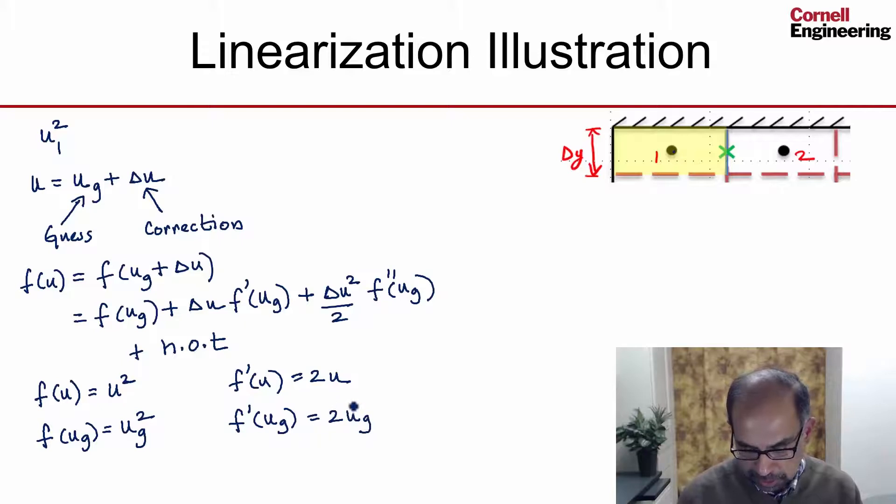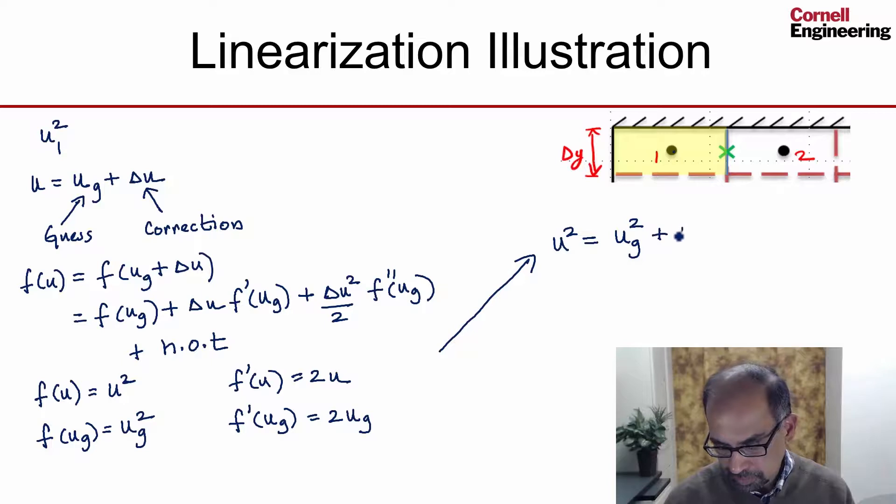If I put these back into the Taylor series expansion, I will get this. I'll get f of u is u squared. So u squared will be f of u guess, u guess squared, plus the correction times f prime of u guess, that's 2u guess.